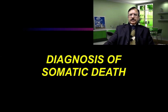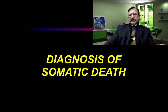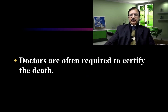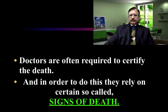Diagnosis of Death. The diagnosis of death is basically the diagnosis of somatic death. As we discussed in the previous lecture, the bodily or clinical death is called somatic death and the organic death is the cellular death. So the diagnosis of death is essentially the establishment of somatic death, because doctors are usually called to certify death in hospitals. They rely on certain signs of death.